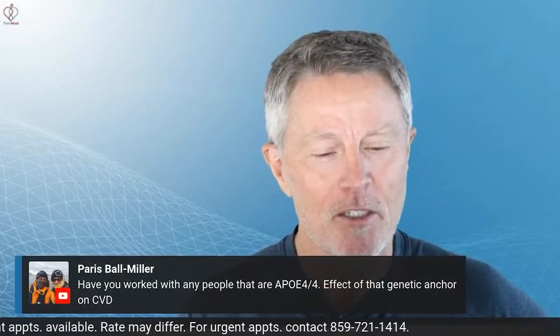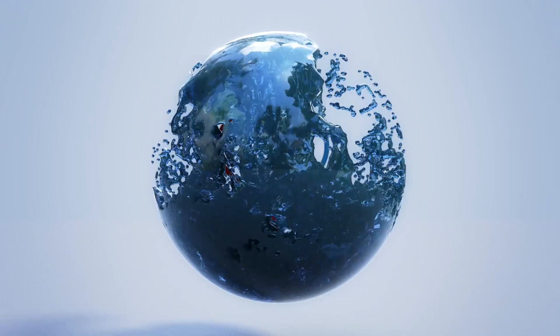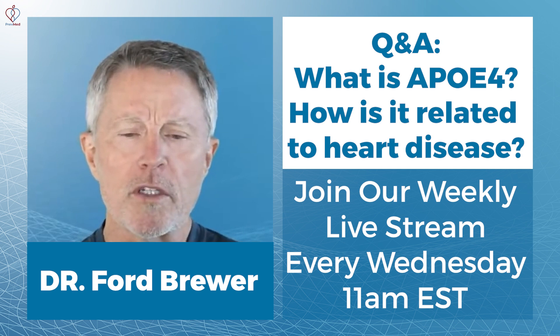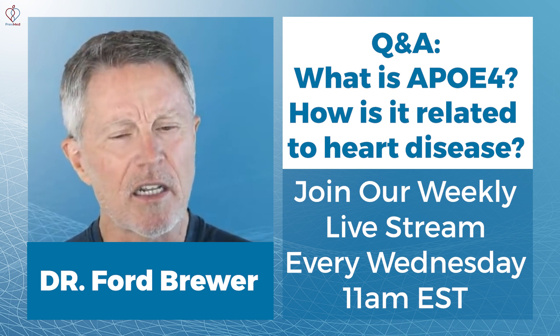Paris Ball-Miller, have you worked with any people that are ApoE4/4? Oh yes, I certainly have. The effect of that genetic marker on cardiovascular disease. So a lot of people will say that ApoE4/4 is more of a heritage and more of an inflammatory type of marker. It was made more sense for hunter-gatherers, etc. I think a lot of that's conjecture.